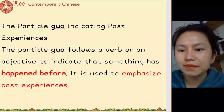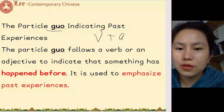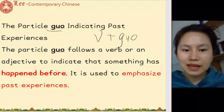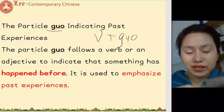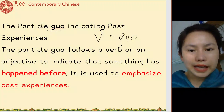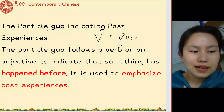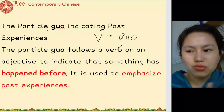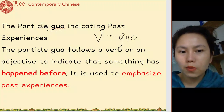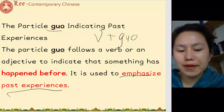过 indicates past experience. It's usually verb plus 过. Like 吃 — eat, 吃过 — that means in the past I have had the experience of eating something. For example 我去过美国 — I've been to America.